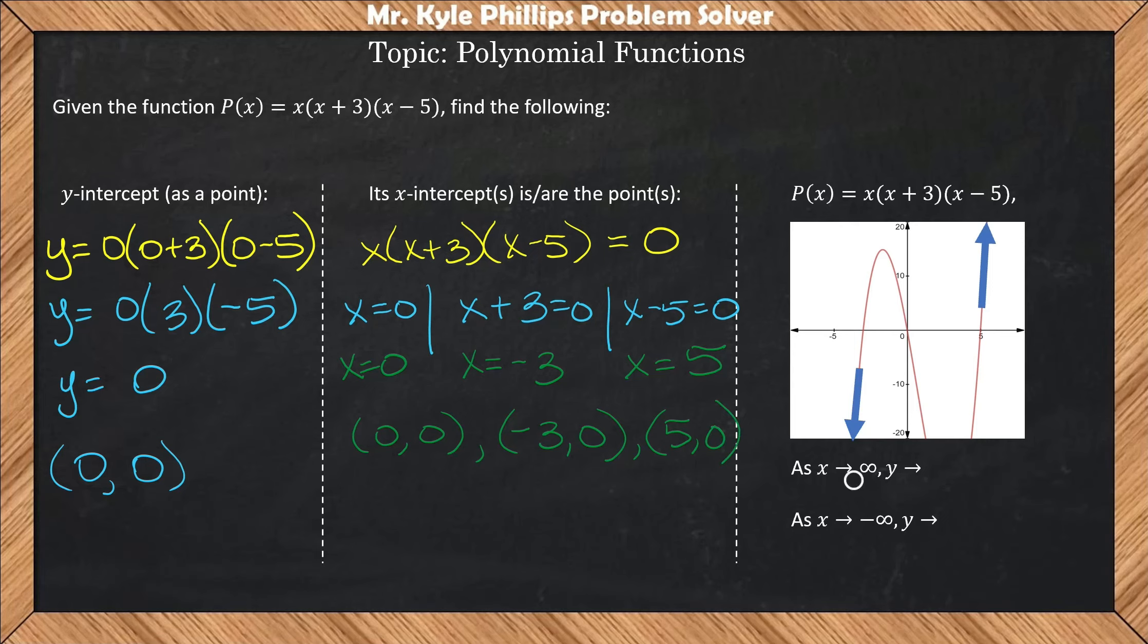Lastly, they want us to look at end behavior. So as x approaches positive infinity, this means that you look to the right of your function, and you see what the graph is doing. Here, my function is going up. So the y values are approaching positive infinity.